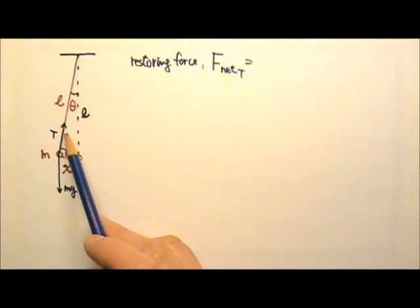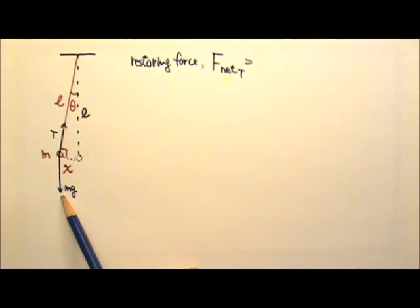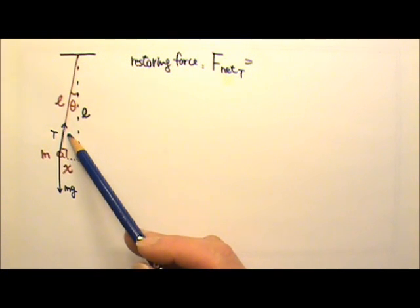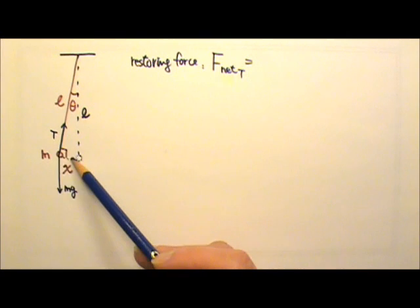we would have tension T and the weight mg. The restoring force along the x direction is tangent to the circle, so the tension does not contribute to it, because tension is perpendicular to the tangent direction.